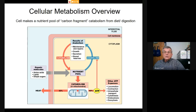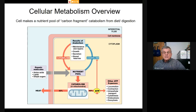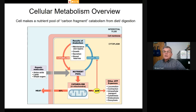Of the energy released when we break carbon down, about 40 percent can be transferred to the manufacture of ATP. The other 60 percent simply escapes—it becomes heat. We do not capture it. So what do we use ATP for?